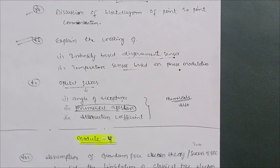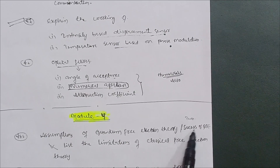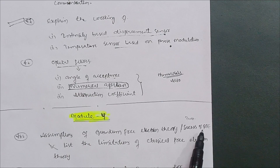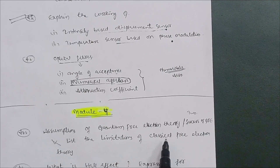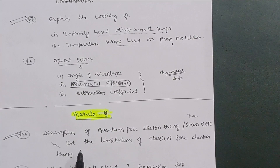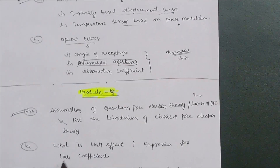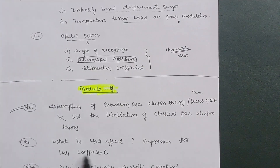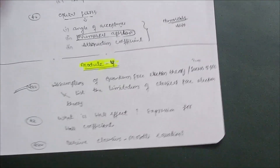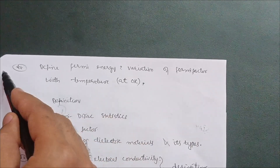For Module 4: cover the assumptions of quantum free electron theory and write down the successes of quantum free electron theory. Also list the limitations of classical free electron theory — this is most important. Sometimes they ask the assumptions of Drude-Lorentz theory, which is also in the syllabus. Next, cover Hall effect: what is Hall effect, expression for Hall coefficient, and derive the Clausius-Mossotti equation — these are three important questions from Module 4.